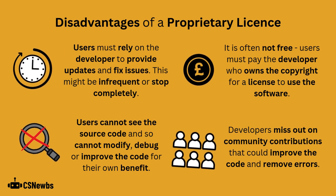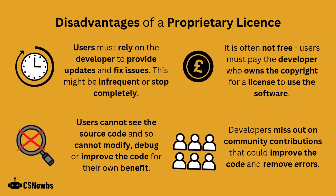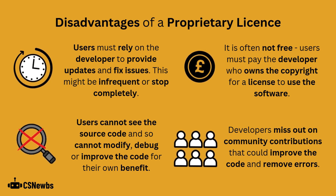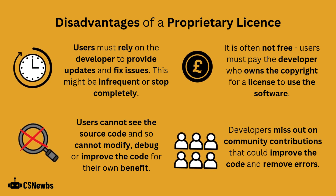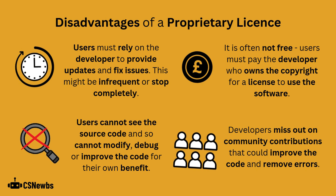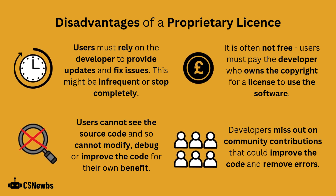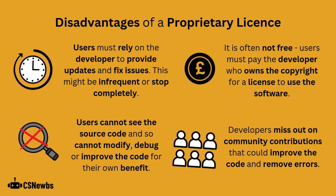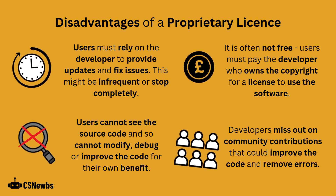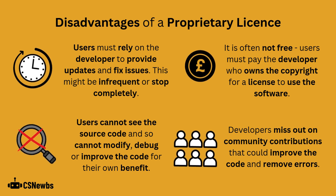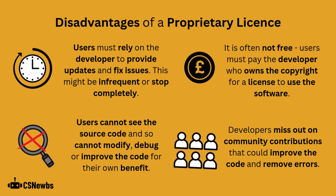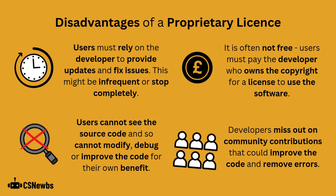The disadvantages of a proprietary license include that users must rely on the developer to provide updates and fix issues. This might be infrequent or stop completely. It is often not free — users must pay the developer who owns the copyright for a license to use the software. Also, users cannot see the source code and so they cannot modify it, debug it or improve it for their own benefit.